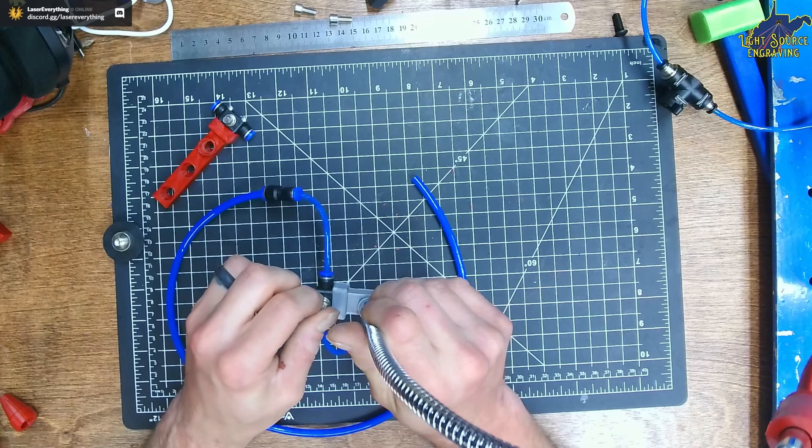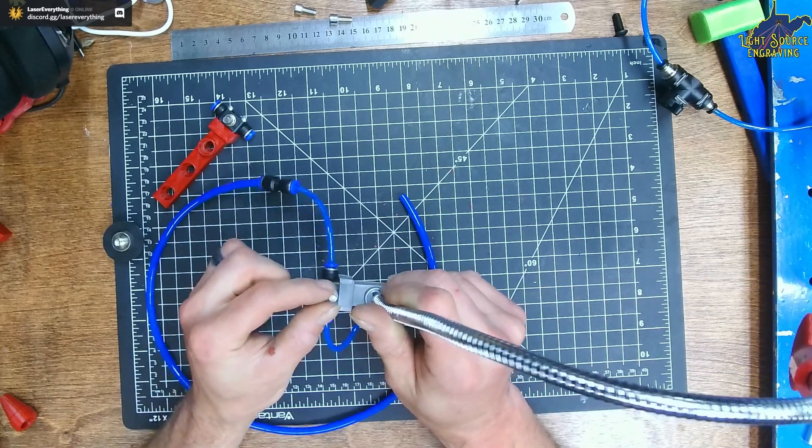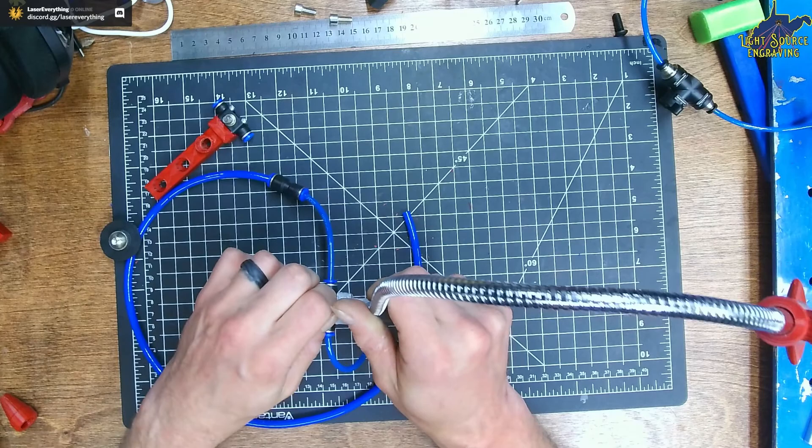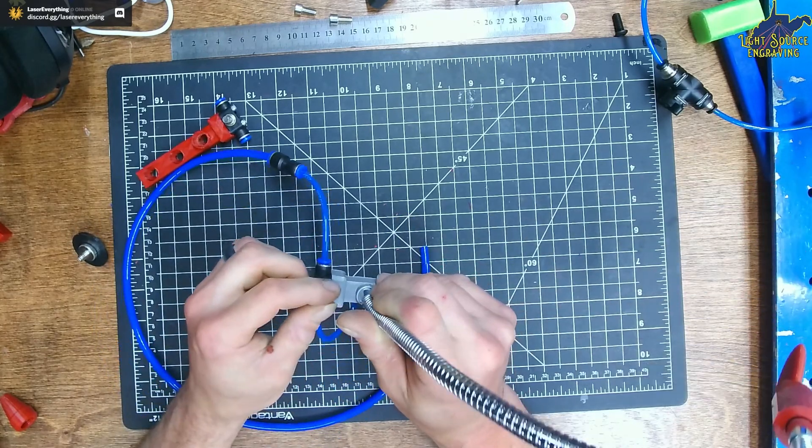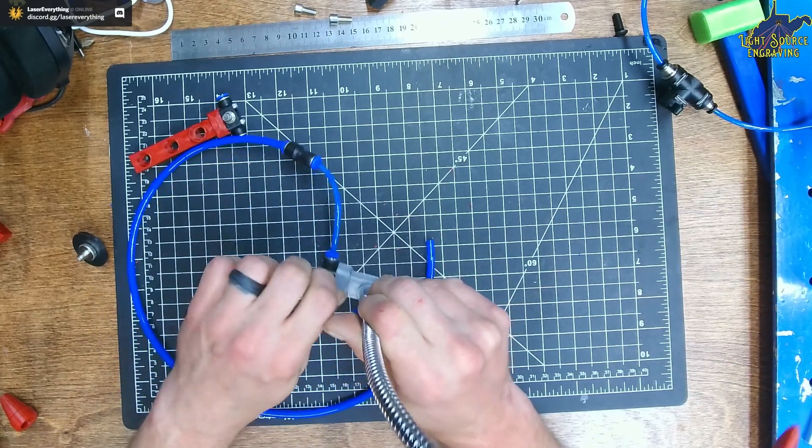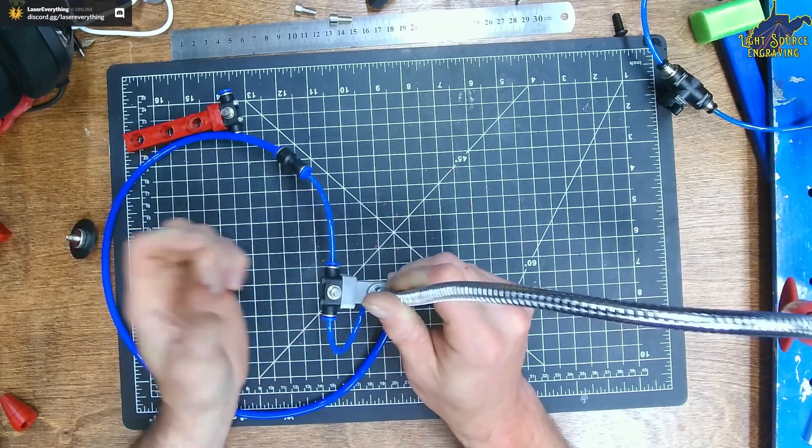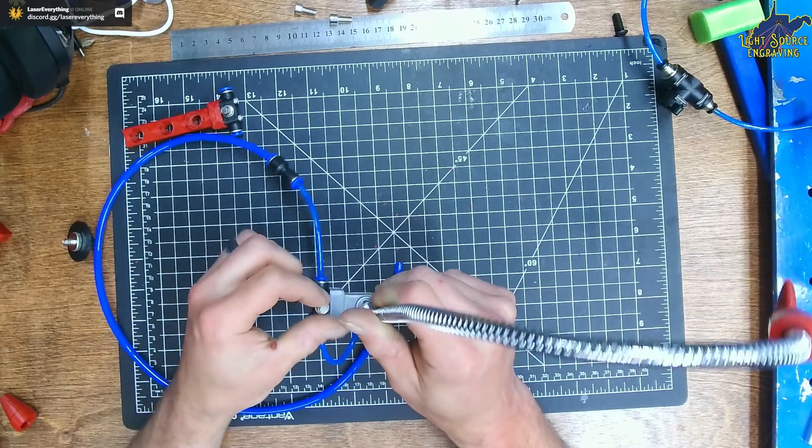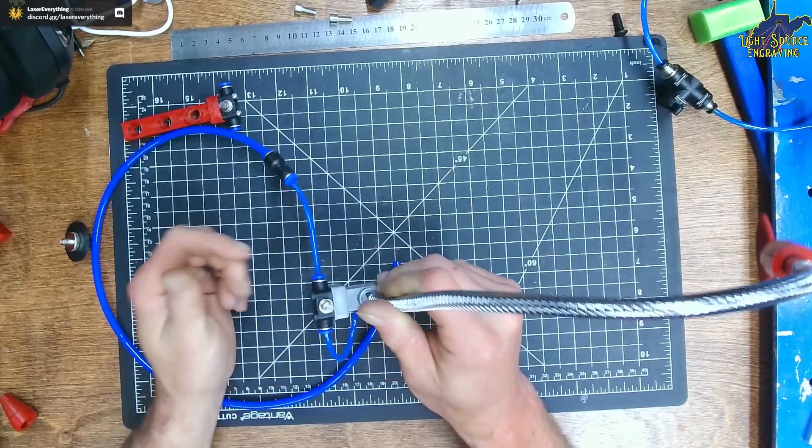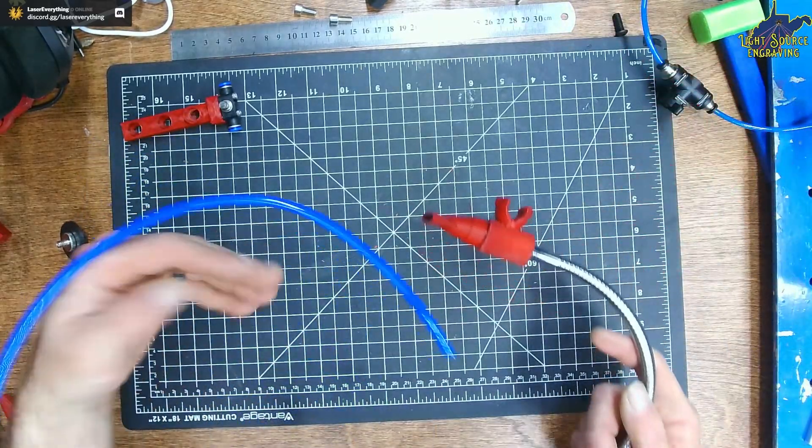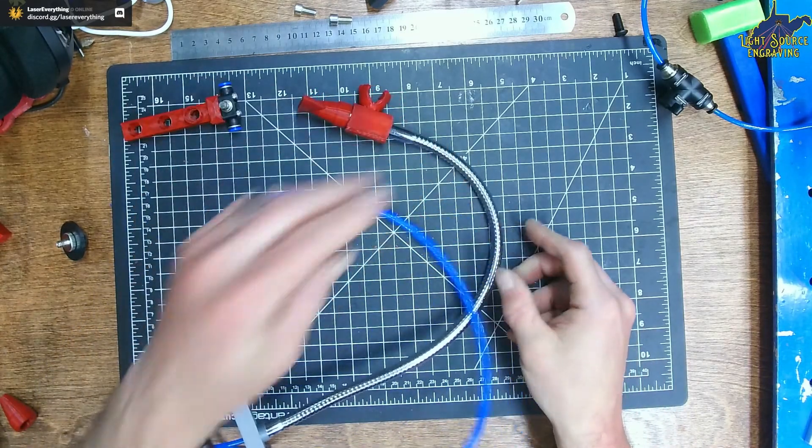To operate the valve: to close it, it is clockwise. To open it, it is counterclockwise. So if we turn counterclockwise, we will open the valve. Clockwise, we will close the valve. And that is all there is to it.